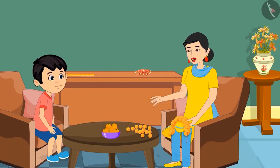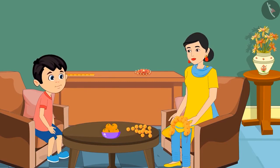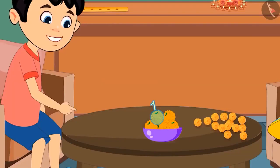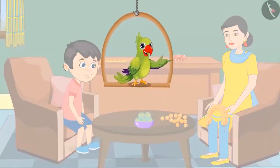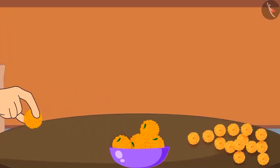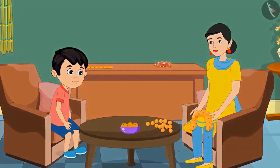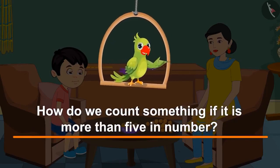Chotu asks how many laddus are in the bowl. His mother, busy making a garland, asks him to count. Chotu counts: one, two, three, four, and five — there are five laddus. Did Chotu count properly? Yes! His mother says he can eat two of the five laddus. So children, like Chotu, you also know numbers from 1 to 5. Let us now see how we count something if it is more than five.